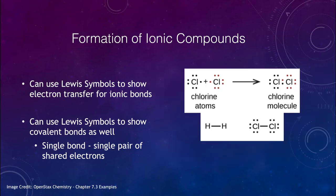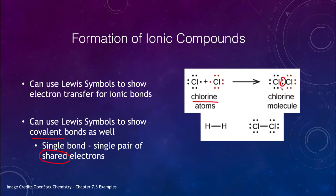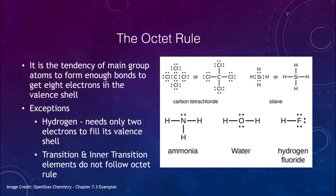Now let's look at covalent bonds. In covalent bonds, electrons are shared. If you bond any element with itself, it will always be a covalent bond. For example, chlorine has seven electrons in each atom. If they share a pair of electrons, each chlorine atom then has eight electrons in its outer shell. We still have the same total of 14 electrons, but a pair is shared. This leads us to the octet rule: atoms want to form enough bonds to get eight electrons in their valence shell.